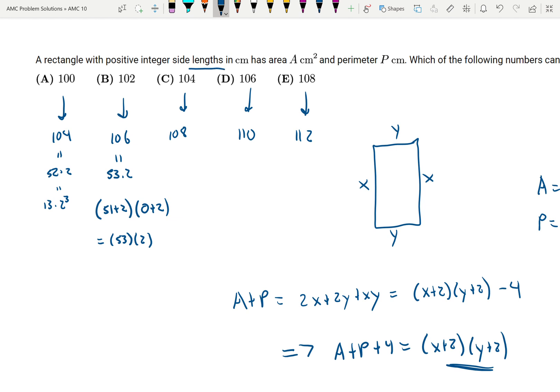The side lengths have to be positive integers. Therefore this value 106, we wouldn't be able to write it this way.